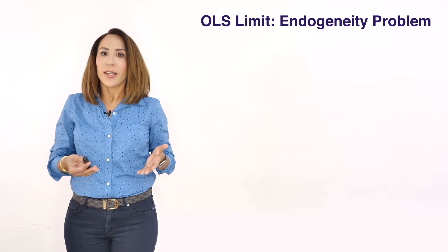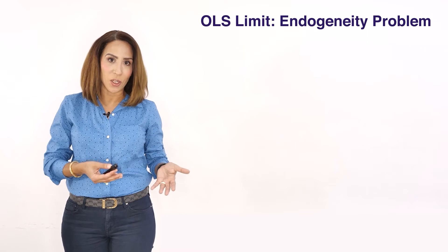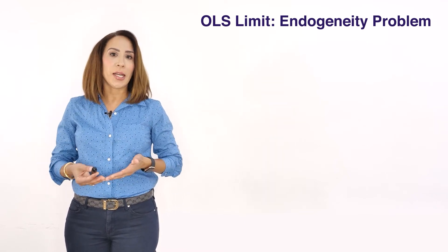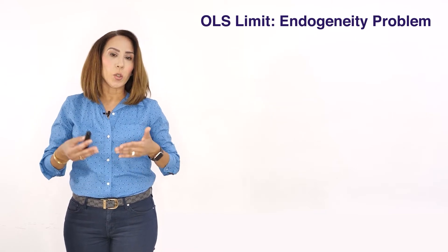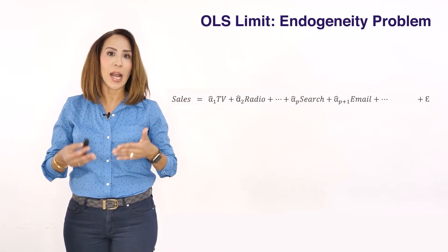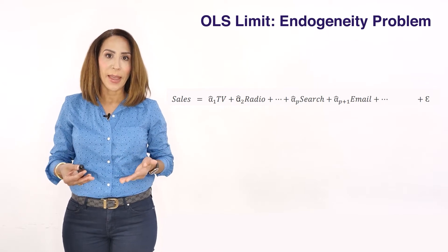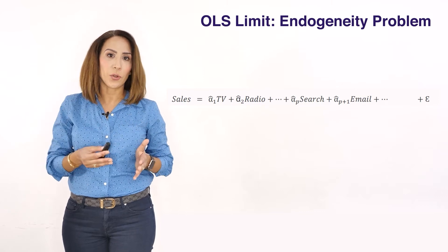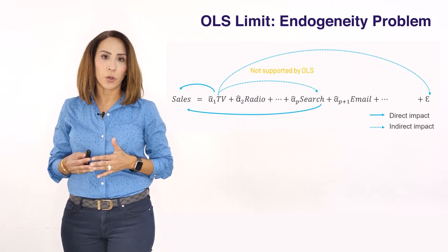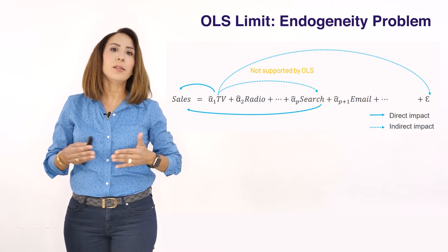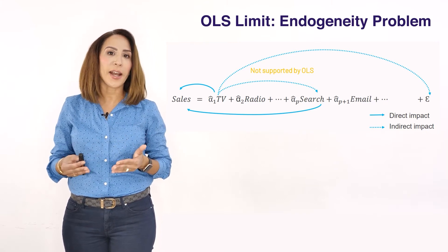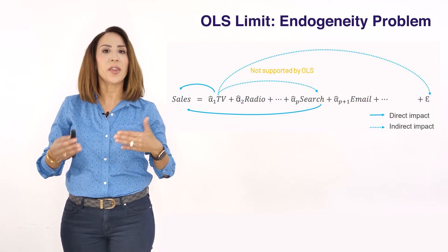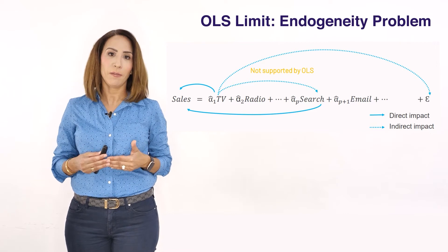The problem is it's very difficult to apply OLS estimation to this type of model. Remember, in regression analysis, applying OLS requires assuming that our explanatory variables are independent. However, in the context of interactive modeling, our regressors will have a correlation with other terms — this is called an endogeneity problem. Because of that, we cannot apply OLS estimation when we know there is an interaction between our independent variables.